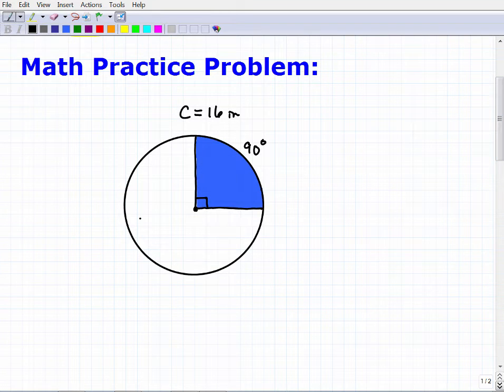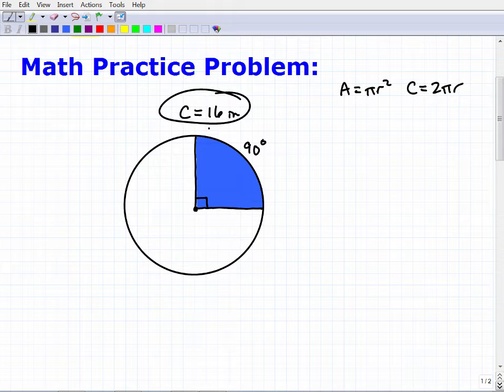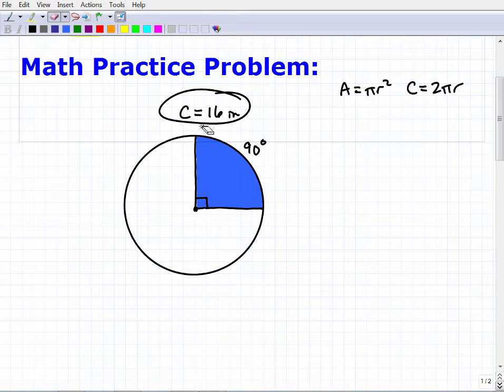All right, so here I'm thinking, okay, I got the circumference. I need to find the area. So the area of a circle is pi r squared. The circumference of the circle is 2 pi r, or the diameter times the radius. But I don't have the radius. I only have the circumference, and the circumference is just the distance around the circle. Kind of think of it as the perimeter of a circle. So we're given 16 inches as the circumference. So let's go ahead and figure out what the radius is.